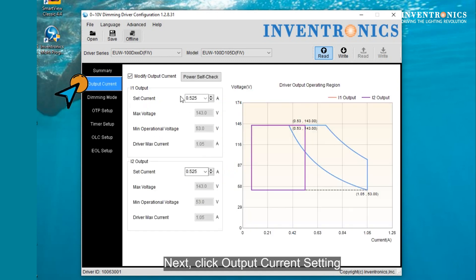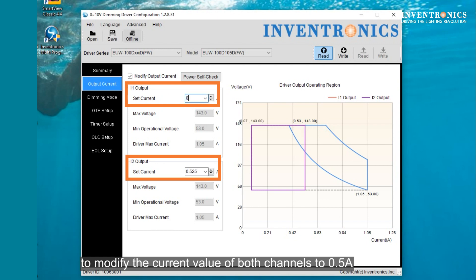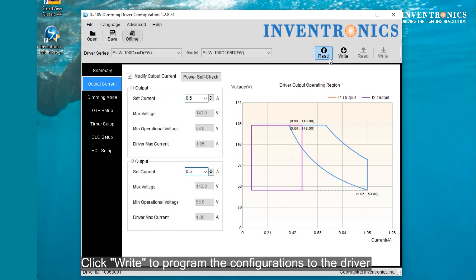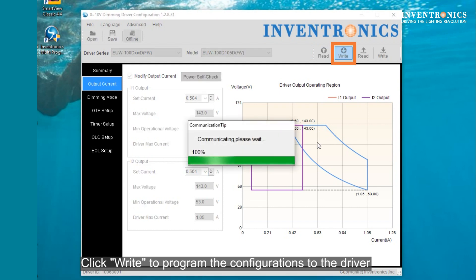Next, you will click the output current setting and modify the current value of both channels to 0.5 amps. Click write to program the configuration file to the driver.